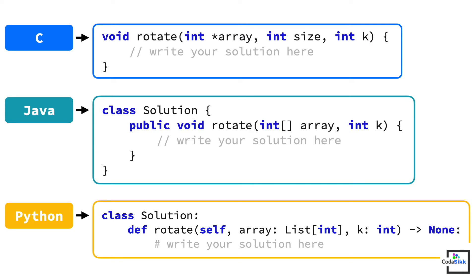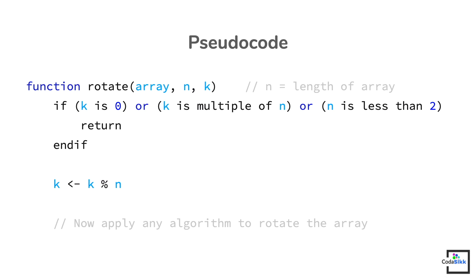The first parameter is the array we need to rotate, the second is the length of the array, and the third is k. In Java we have only two parameters — the array and k — since we can get the length from the array itself. So regardless of the language used, we will always require the array, its length, and k. In our pseudocode we will take a function with these three parameters.